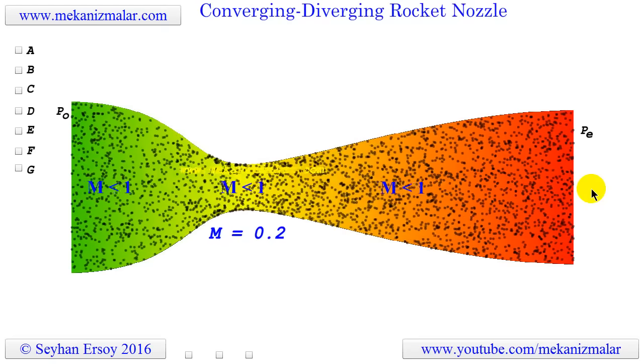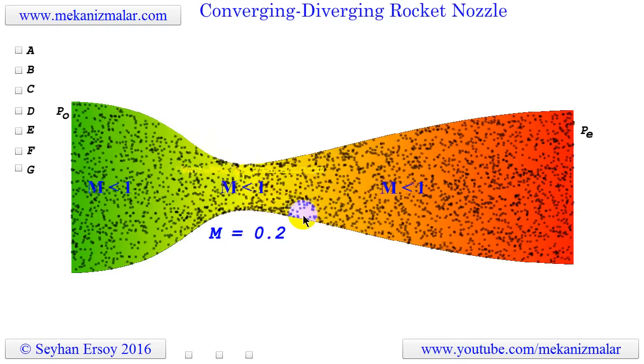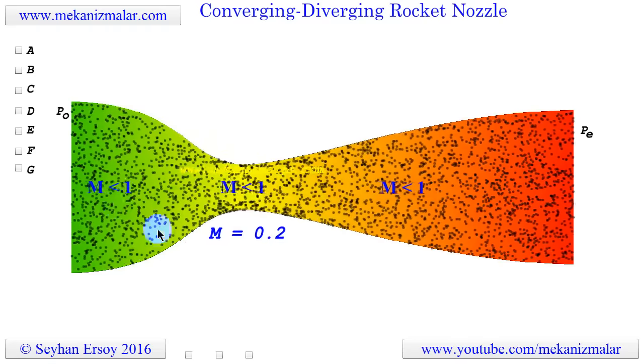If this is the case, then why do rockets have converging-diverging nozzles to create thrust? Shouldn't rockets only have the converging nozzles?